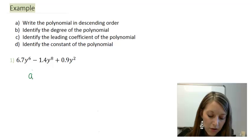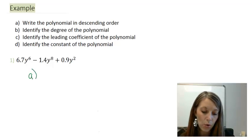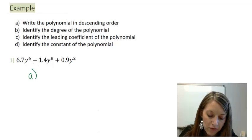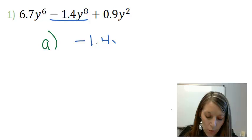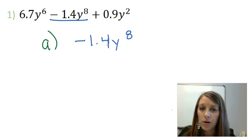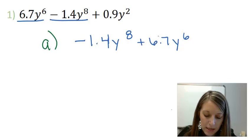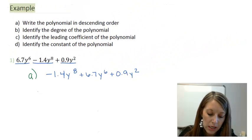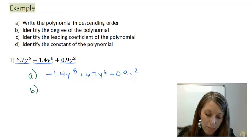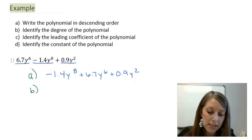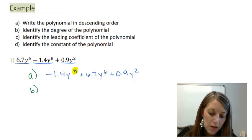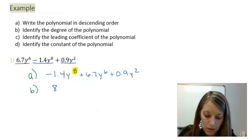Let's hop to it. First, writing it in descending order means we pick out our highest exponent first: negative 1.4y to the eighth — remember to keep the negative with it — then 6.7y to the sixth, and our lowest exponent is 0.9y squared. Descending order is by the exponent. For Part B, degree is the highest exponent. Since we've written it in descending order, it's the first one — so the degree of this polynomial is 8.